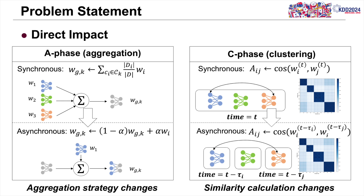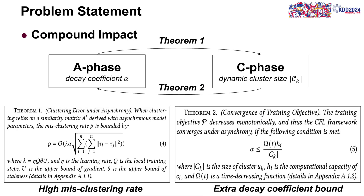Stale updates from slower clients hinder training convergence and accuracy. Asynchronous aggregation can manage staleness via weight decay. What's worse, a compound impact occurs: changes in individual steps also affect the bi-level framework's ability to optimize the training and clustering objectives, which exerts higher requirements on CFL.